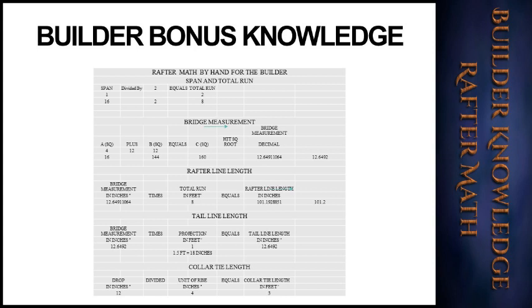We'll give you a bonus knowledge reminder in case you have a test coming up — you can also make an Excel spreadsheet like we did to help yourself. The span is always divided by two to get your total run. The bridge measurement is found with a² + b² = c². Rafter line length is found by taking your bridge measurement in inches times your total run in feet, which is half of the span. Tail line length is your bridge measurement in inches times the projection in feet.